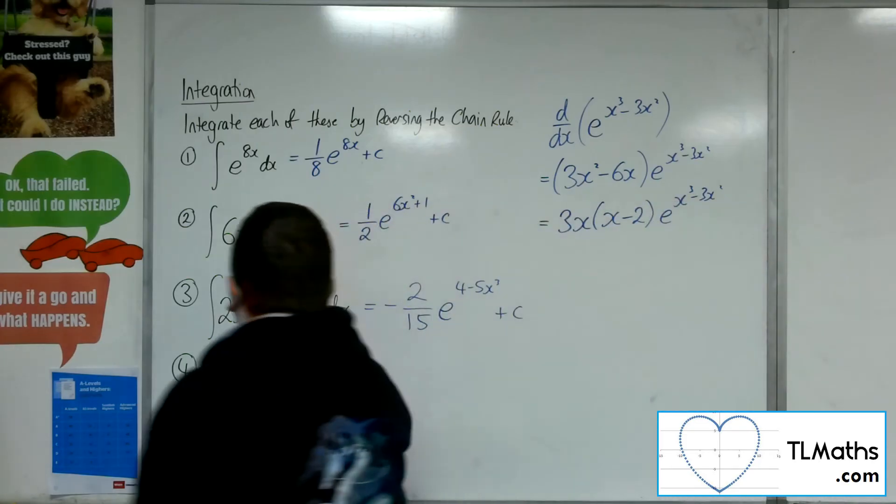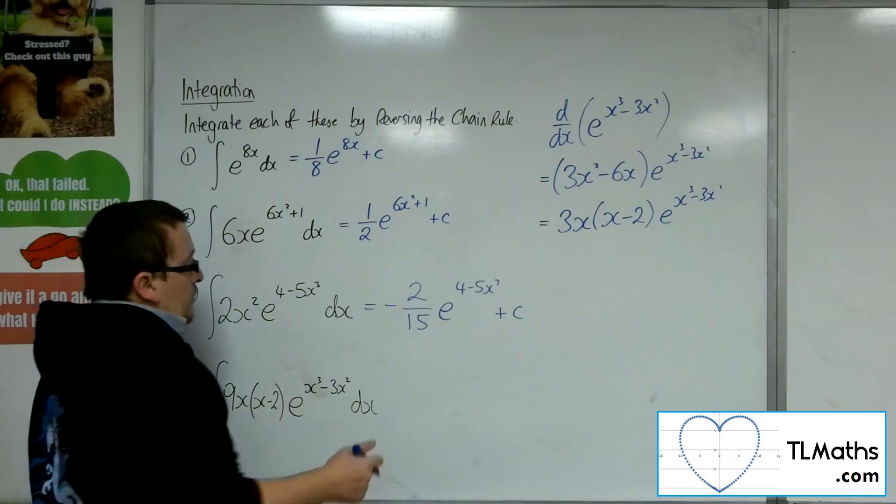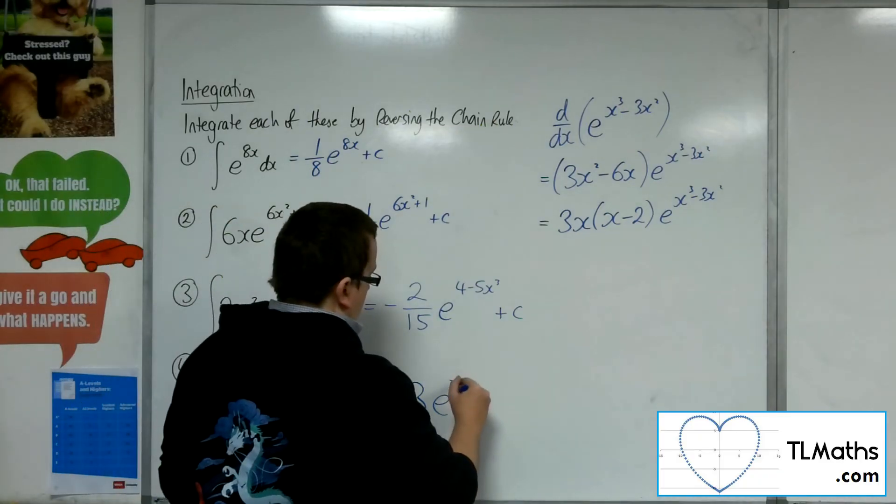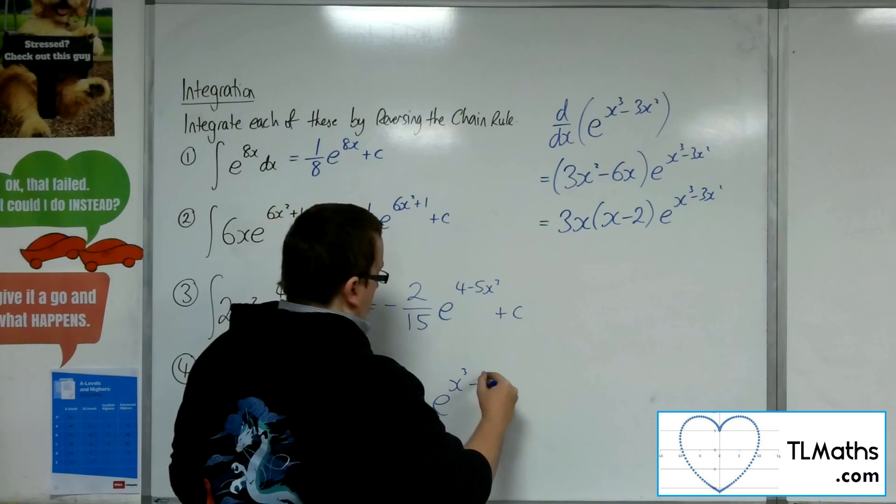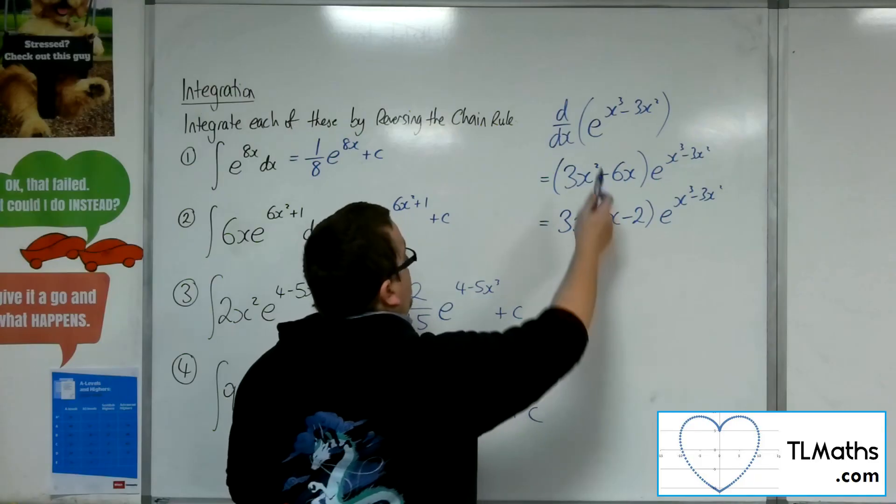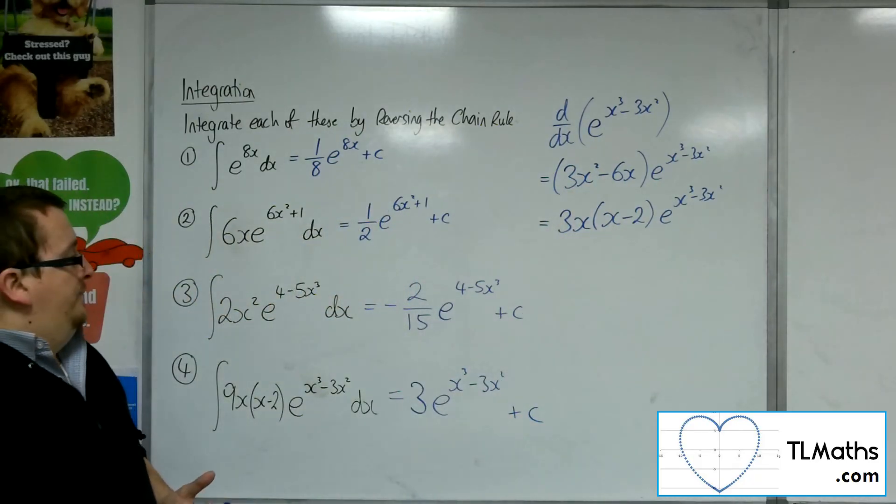So I can see that I've got a 9 here, I've got a 3 there. So 9 over 3 is 3. So I actually need 3 lots of e to the x cubed minus 3x squared plus c. So 3 lots of the derivative of this gets me to what I've got there.